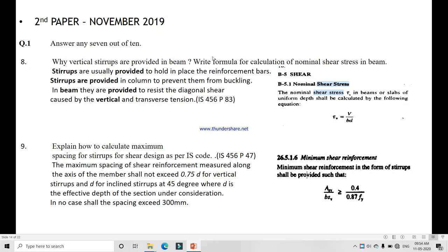Question 1.8: Why vertical stirrups are provided in beam? Write formula for calculating nominal shear stress in beam. Why stirrups are provided? Stirrups are usually provided to hold the reinforcement bars, that means it will hold main reinforcement bars. Also, stirrups are provided in column to prevent from buckling. In a beam they are provided to resist diagonal shear caused by the vertical and transverse tension.